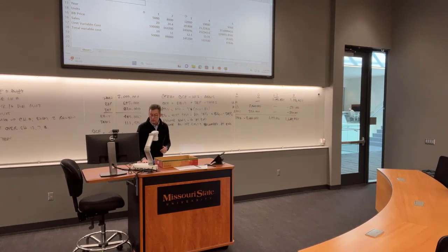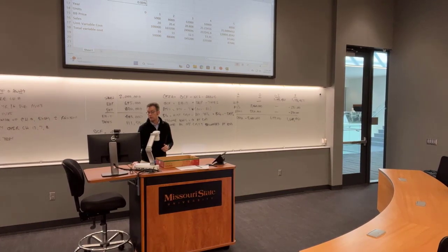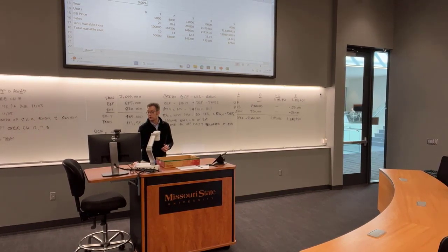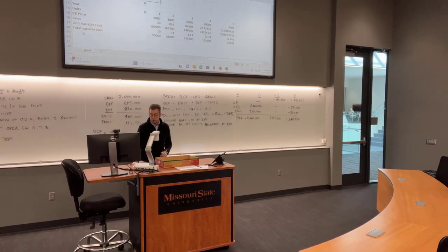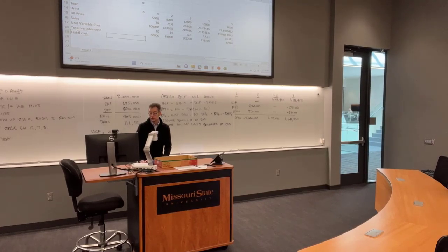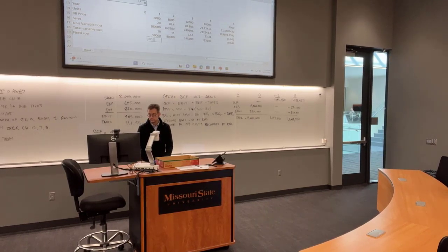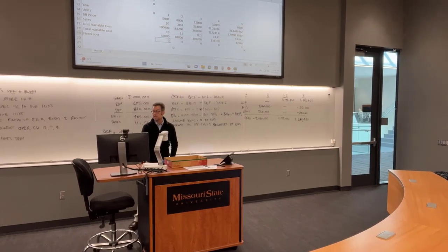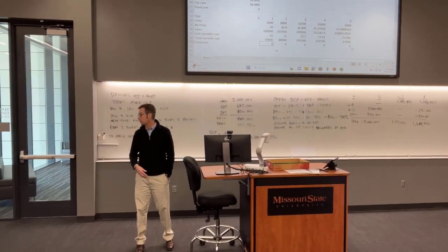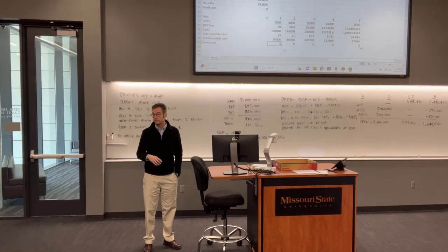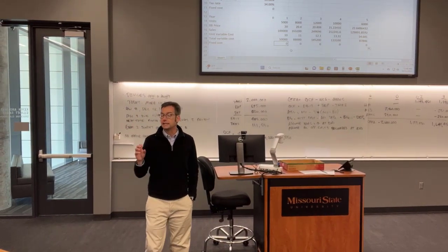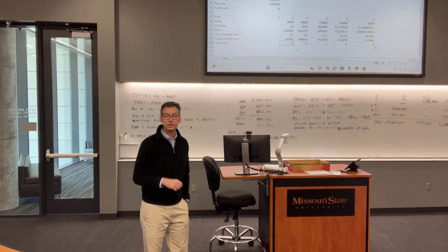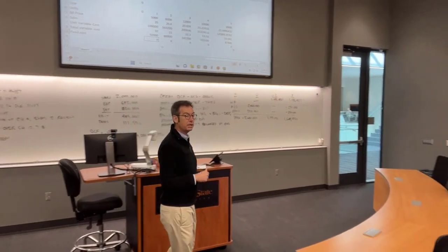I'm going to go ahead and add a fixed cost row as zero since we don't know anything there. Do fixed costs have to be the same every year? No — think about a CEO's salary going up 5, 10, 20% per year. When we say it's a fixed cost, we mean it doesn't vary with production. Everything that varies with production is up in that unit variable cost row.